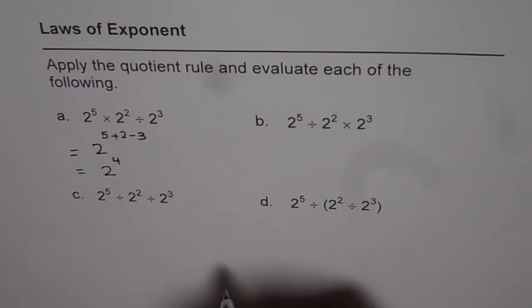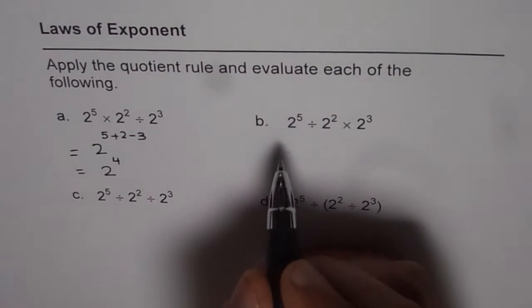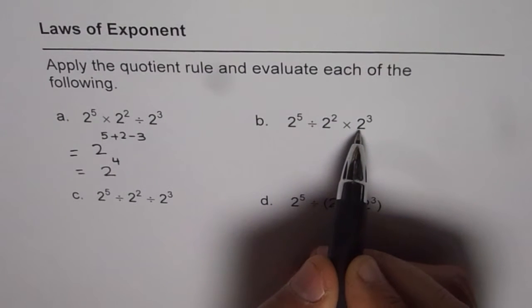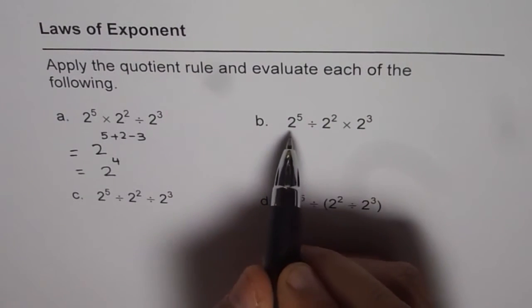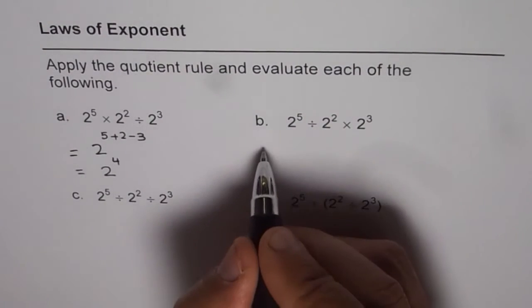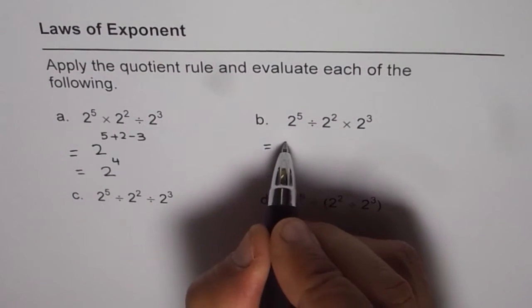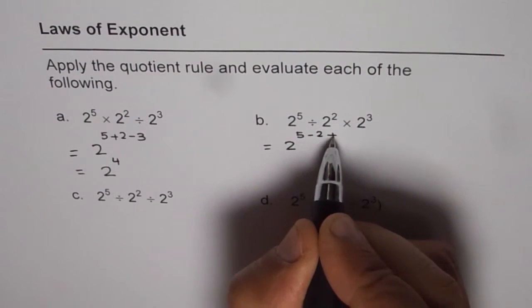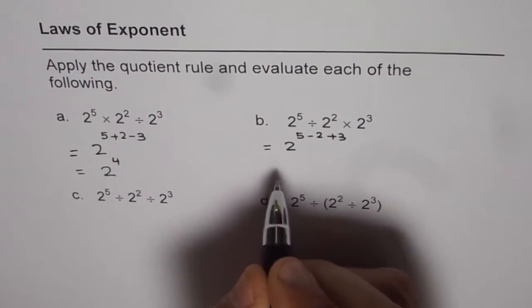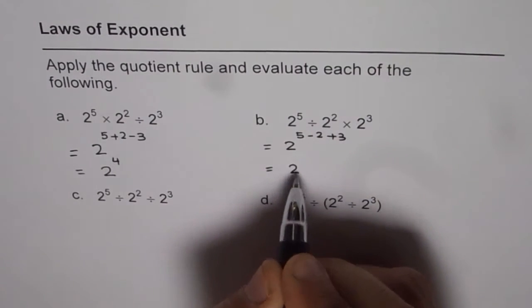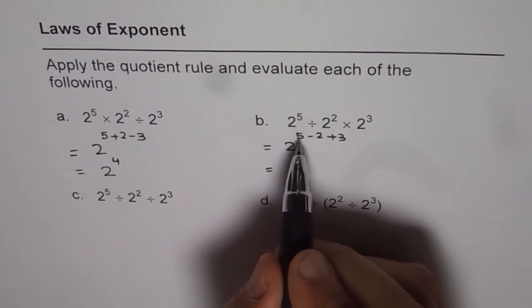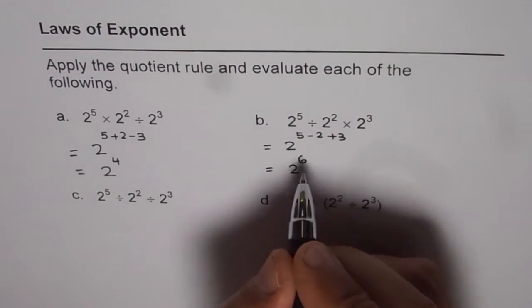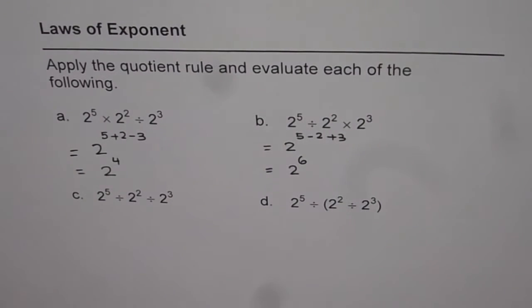Let's do the next one. Here, 2 to the power of 5 divided by 2 squared times 2 cubed. Again, move from left to right. So we get 2 to the power of 5 minus 2 plus 3. In this case the answer is 2 to the power of 6. See how different it is.